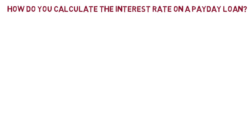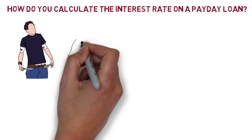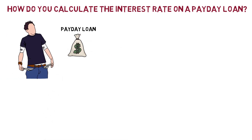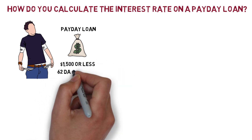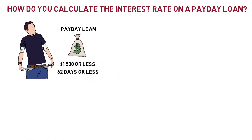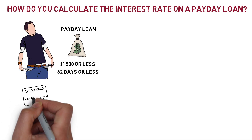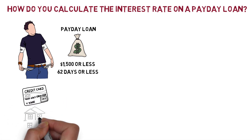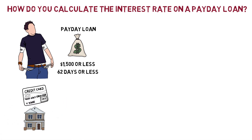How do you calculate the interest rate on a payday loan? A payday loan generally refers to a short-term loan of $1,500 or less with a term of 62 days or less. Normally when you borrow money, say for using a credit card or for your mortgage, the interest rate you are being charged is known.